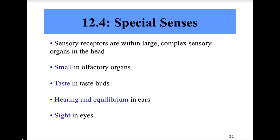Sections 12.4 and 12.5 are our last sections of this chapter, but section 12.4 is quite in depth. As we focus on the special senses, our objectives include: explain the relationship between the sense of smell and taste; describe how the sensations of smell and taste are produced and interpreted; name the parts of the ear and explain the function of each part; distinguish between static and dynamic equilibrium; describe the roles of the accessory organs to the eye; name the parts of the eye and explain the function of each part; explain how the eye refracts light; explain how the brain perceives depth and distance; and lastly, describe the visual nerve pathway in the eye.